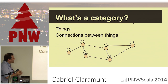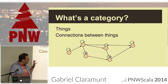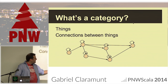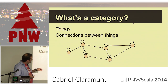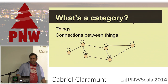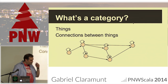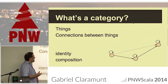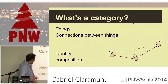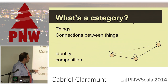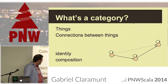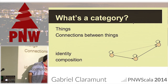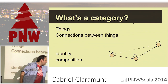So the basic thing: what's a category? In very abstract terms, it's things and connections between things — that's it. We don't really care about what the things are; we care about the connections and the structure. For a category, we ask for two things: identity — every object is connected to itself — and composition — if I have this connection and that connection, it's the same as having the combined connection.